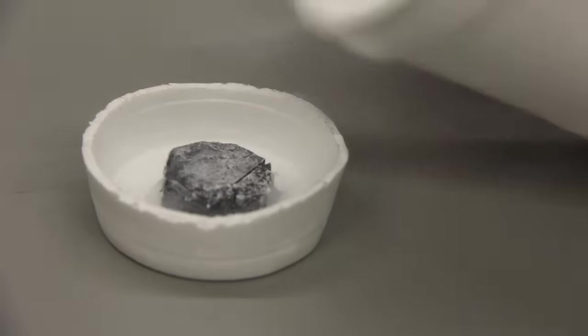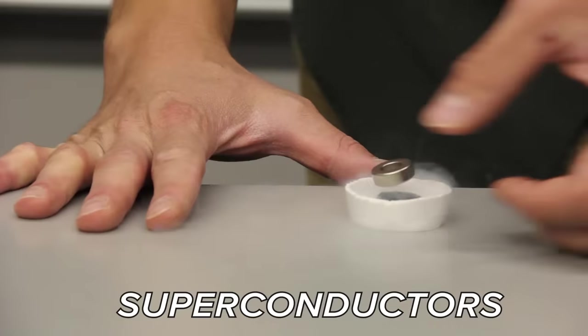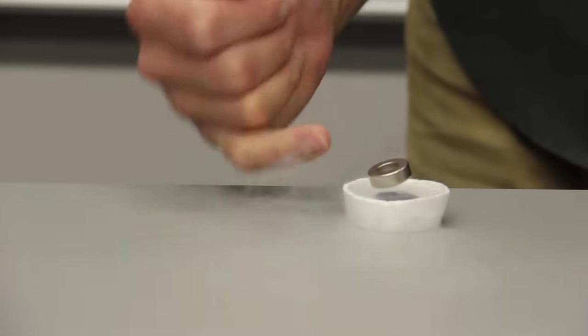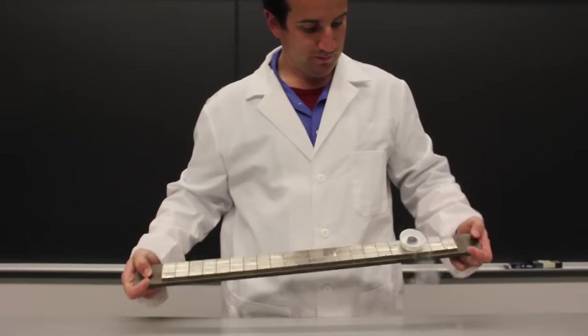Of course, the best diamagnets are superconductors, which at low temperatures provide exact opposite repulsion to whatever magnetic field is present when they're chilled. They are perfect diamagnets.